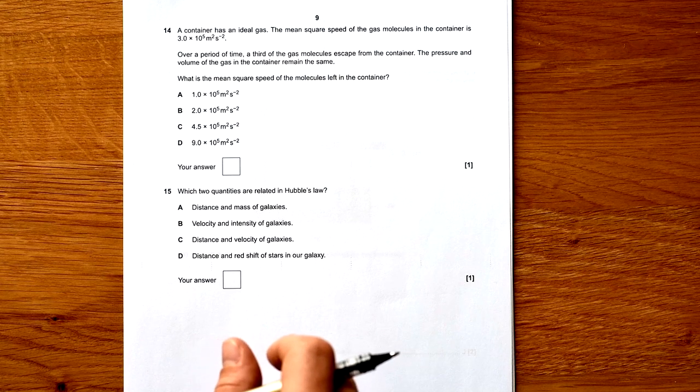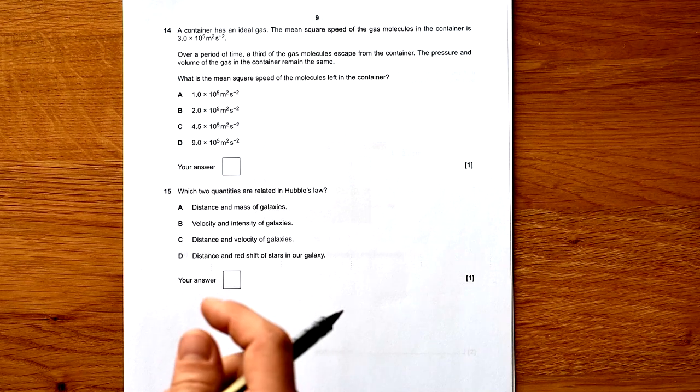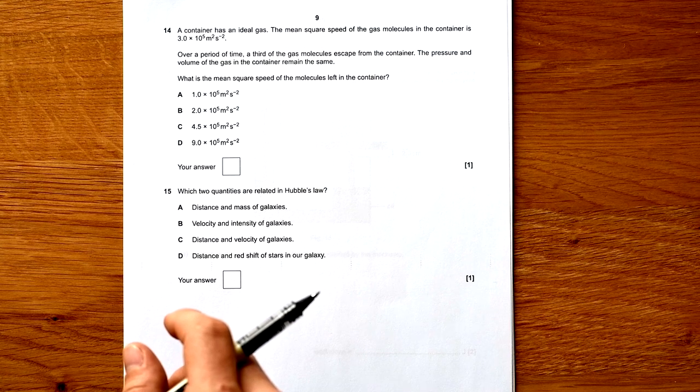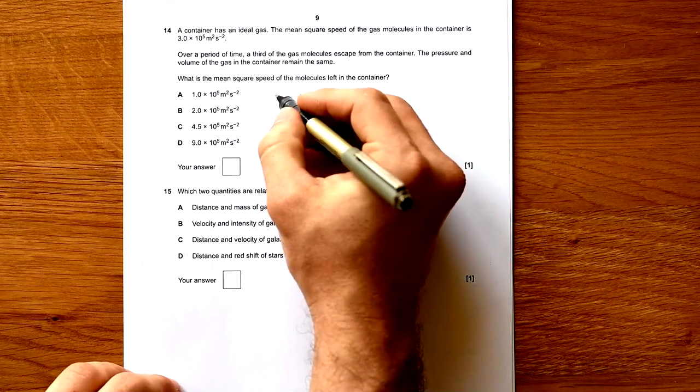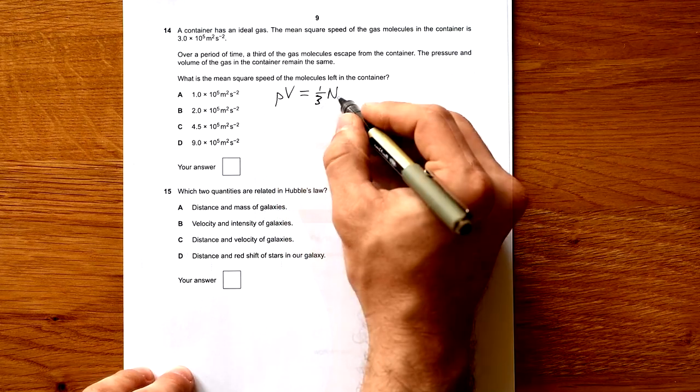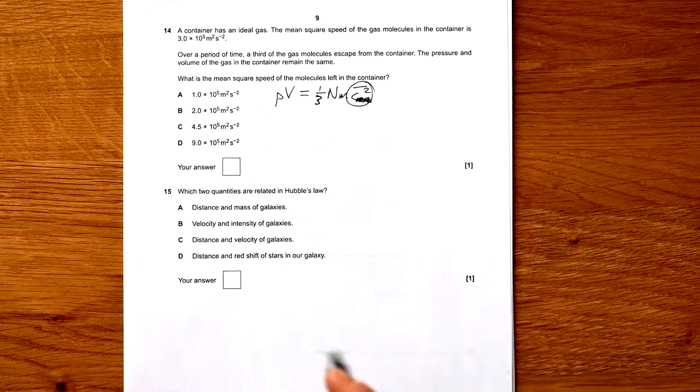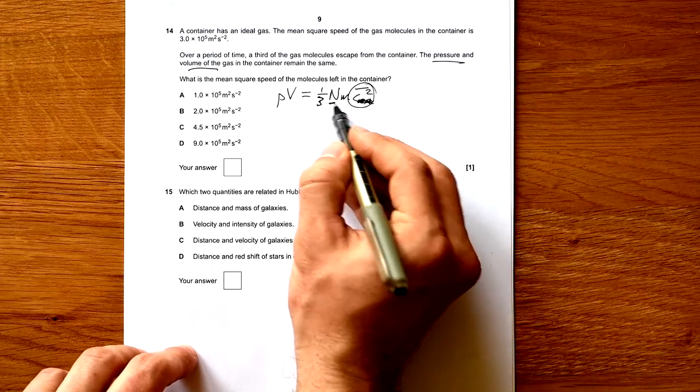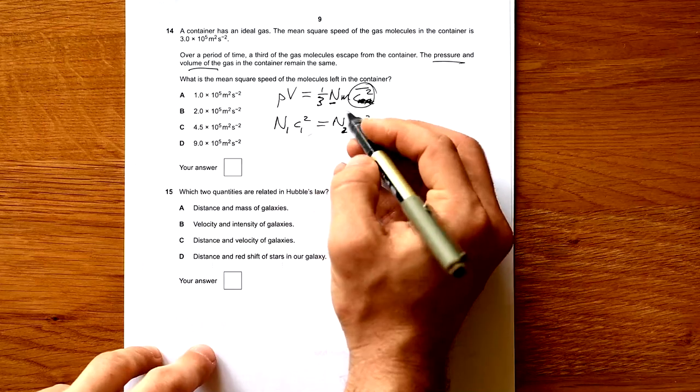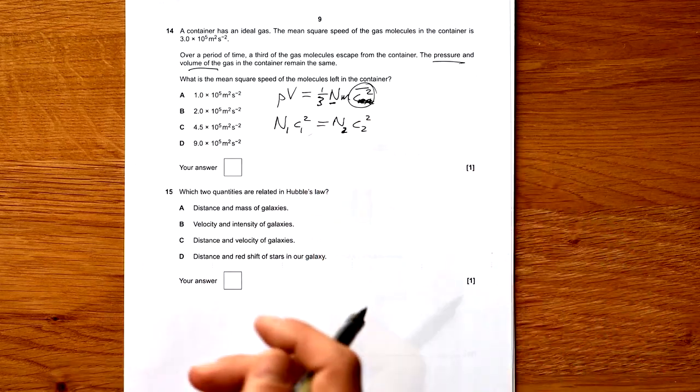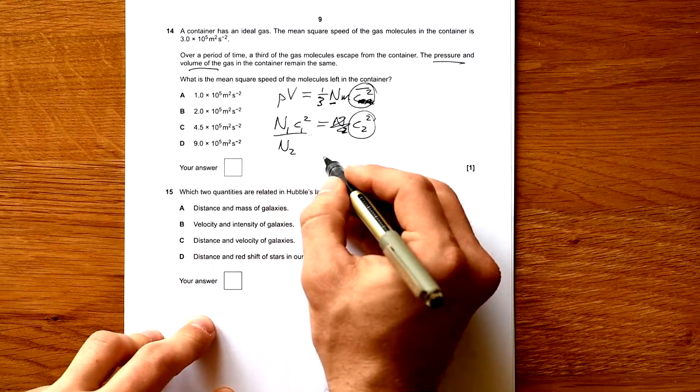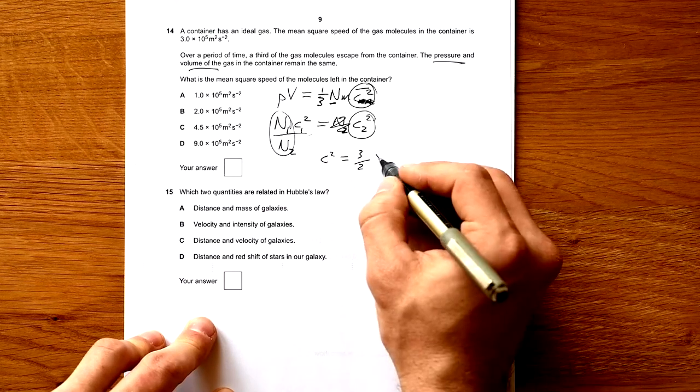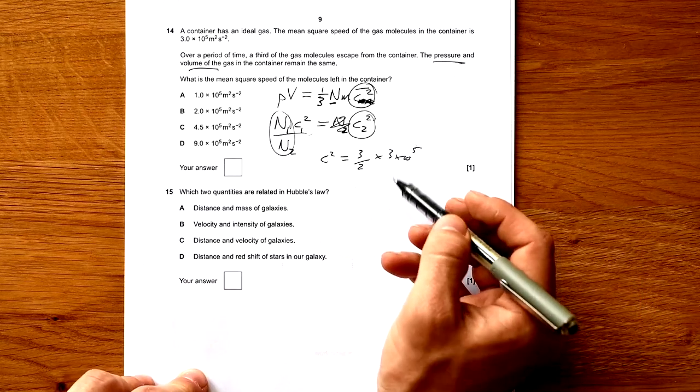Question 14: A container has an ideal gas. The mean square speed of the gas molecules is 3 times 10 to the 5 meters squared per second squared. Over time a third of the gas molecules escape. Pressure and volume remain the same. What is the mean square speed of the molecules left? We know PV equals third nm c rms squared. If pressure and volume stay the same but we've lost a third, n is decreasing. So n1 c1 squared equals n2 c2 squared. Taking this over we end up with n over n2, that's just three halves times three times ten to the five. One and a half times this gives us C.